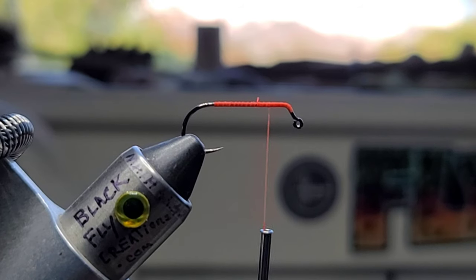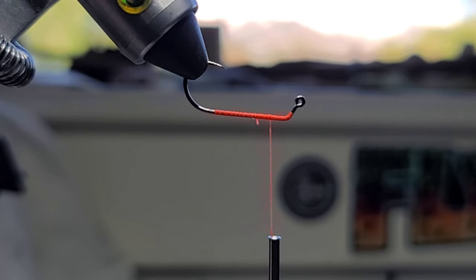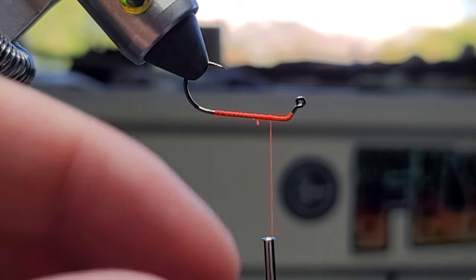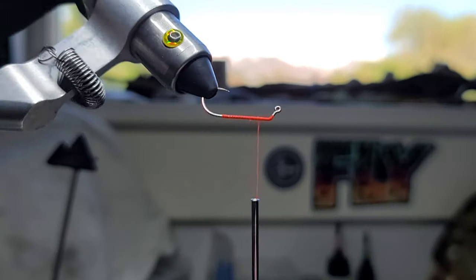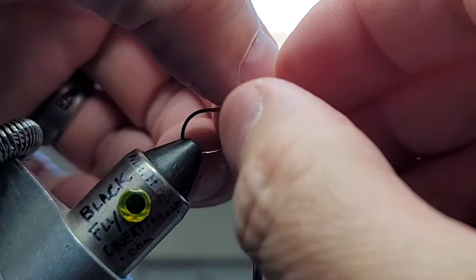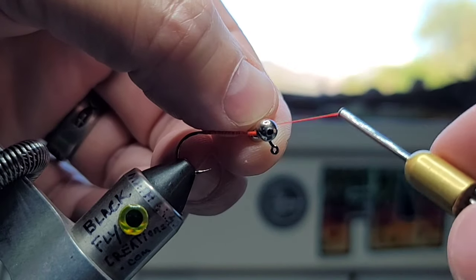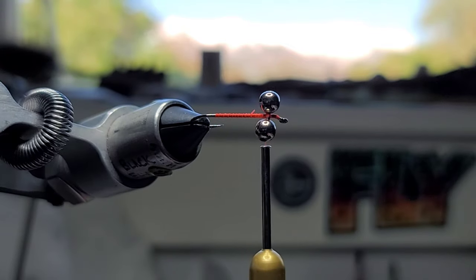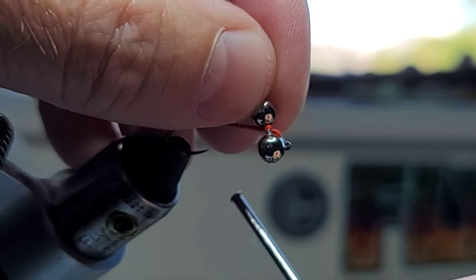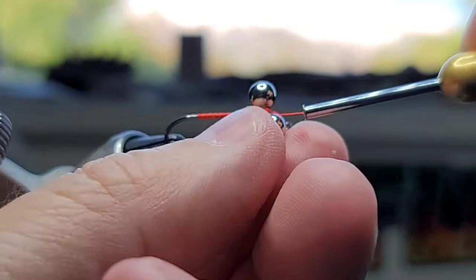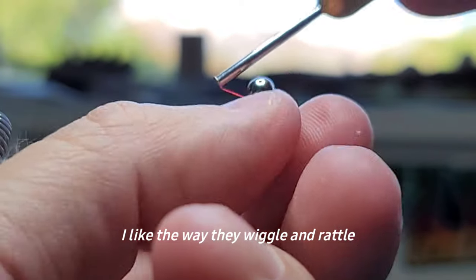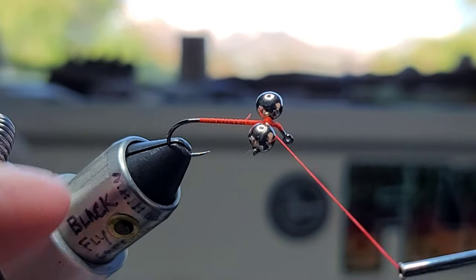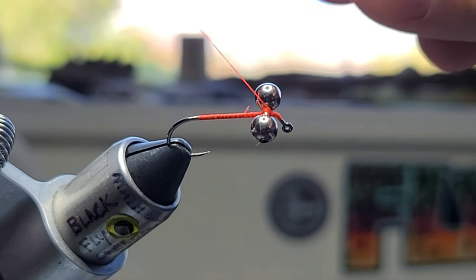When we fish this fly we want this fly to ride like this, hook point up. You get higher hookup ratios and less snags. We're gonna tie these eyes right in front of that bend. I'm just gonna crisscross here, going a couple wraps this way and then I'll switch and do a few wraps this way.